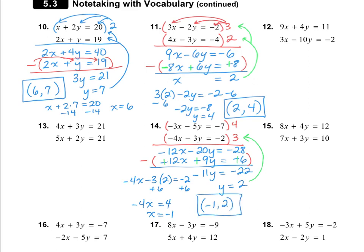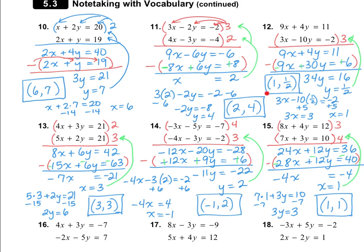I would like for you to please do numbers 12, 13, and 15 on your own. For number 12, I got (1, 1/2). For number 13, (3, 3). And for number 15, (1, 1). Please pause the video and check to see if you have any mistakes and see if you can find them.